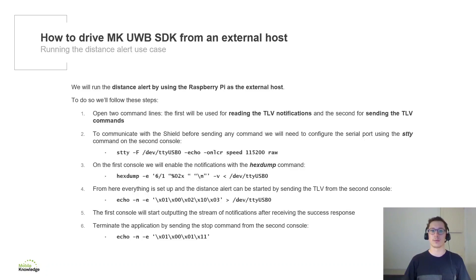We will run the Distance Alert using the Raspberry Pi as the external host by following these steps. First, we will open two command lines: the first will be used for reading the TLV notifications, and the second for sending the TLV commands. To communicate with the shield, we will configure the serial port using the stty command on the second console. On the first console, we will enable notifications with the hex-dump command with some formatting. Once set up, the Distance Alert is started by sending the start command. After receiving the success response, the first console will output the stream of notifications once the tag is powered on. Finally, we will terminate the application by sending the stop command from the second console.